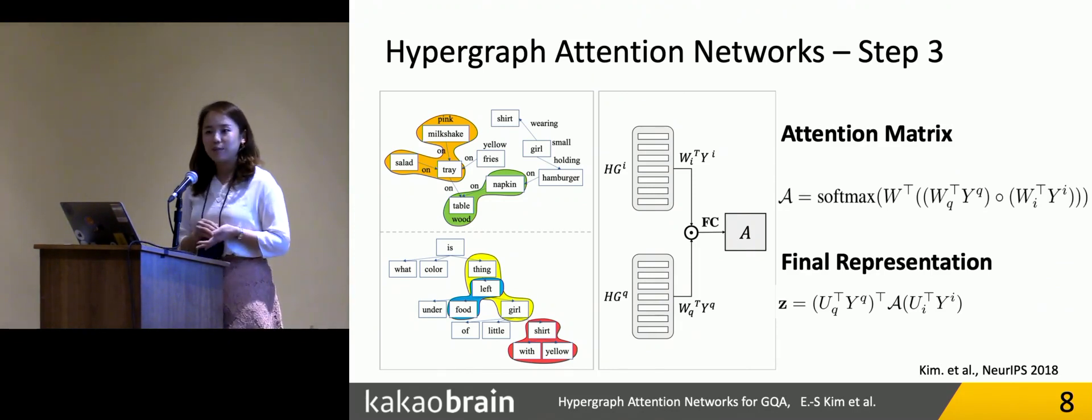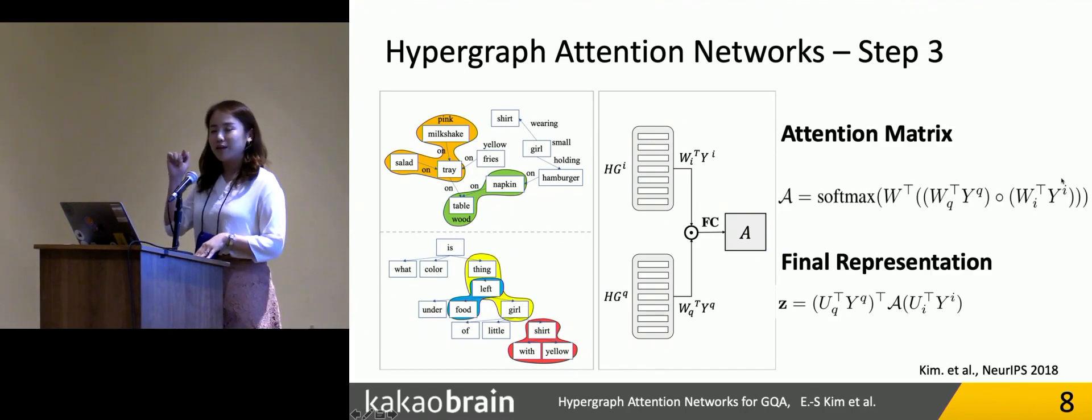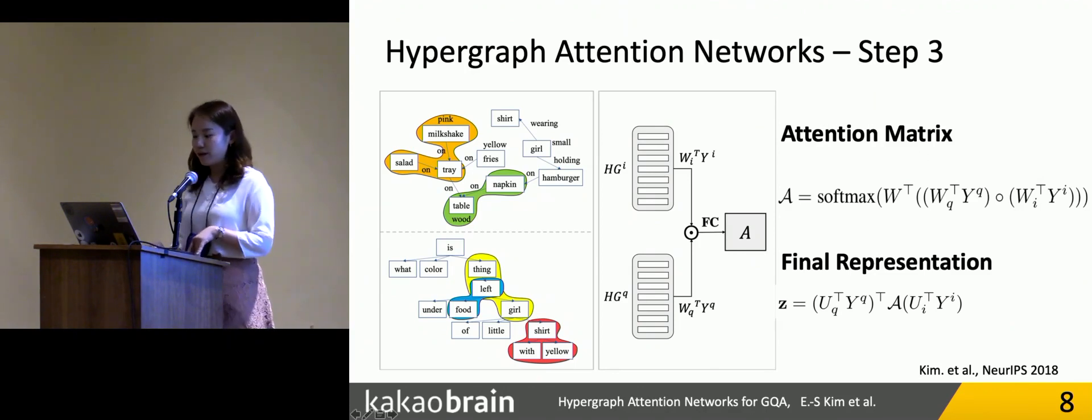After sampling n number of random walk paths and m number of random walk paths from the two hypergraphs, we define the semantic of each random walk path. As the random walk path consists of a series of word vectors, word information, each semantic of random walk path is represented as a summation vector including the random walk path. After getting each semantic representation for the random walk path, we can calculate the attention matrix by using just a simple bilinear operator like this.